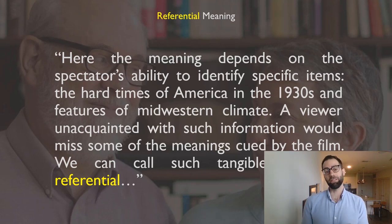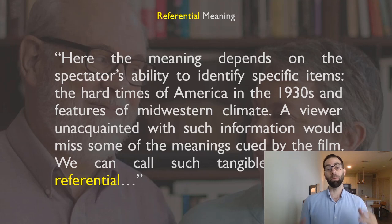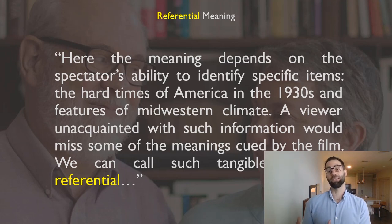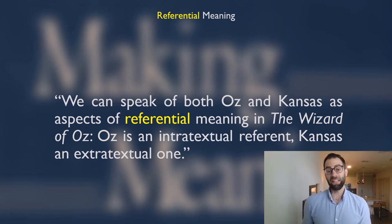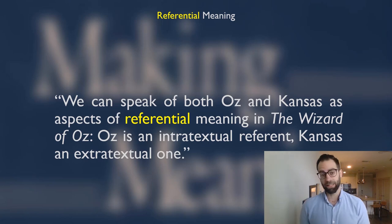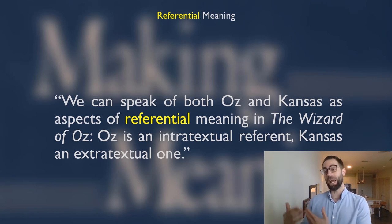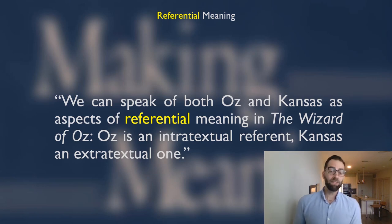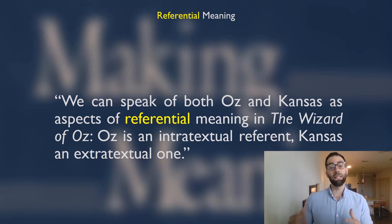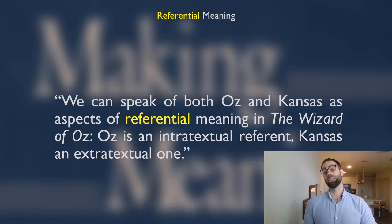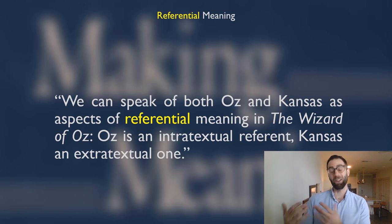Referential meaning refers to the tangible things in a film that are referred to. It helps to understand that The Wizard of Oz takes place in 1930s America in the Midwestern climate — the film refers to those actual places and times. But referential meaning also includes things not in our world. Bordwell writes: 'We can speak of both Oz and Kansas as aspects of referential meaning. Oz is an intratextual referent; Kansas, an extratextual one.' Kansas exists in our world — extratextually — while Oz only exists within the text, intratextually. It's still a referent because it's constantly being referred to, and to understand the film, you have to understand that Oz is indeed a place.